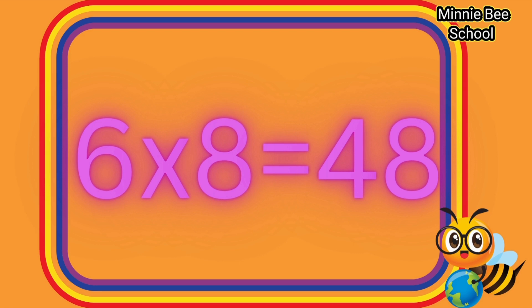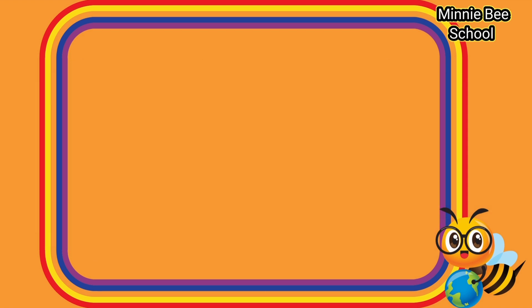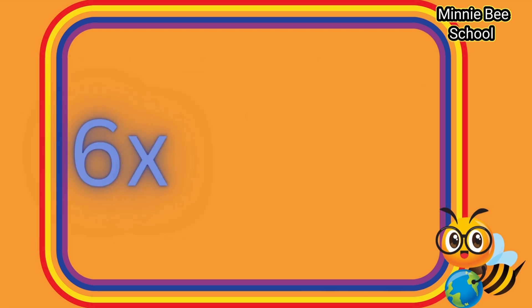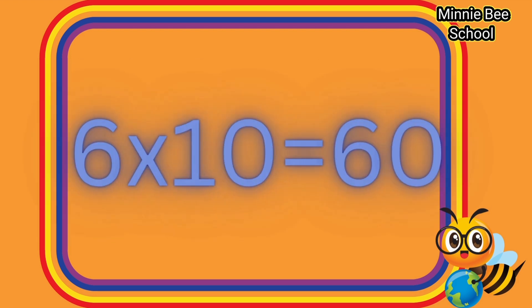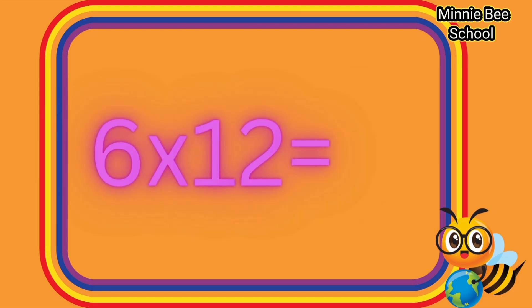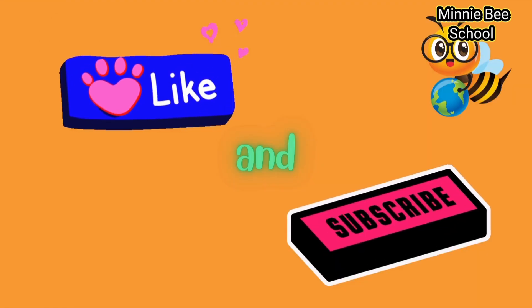Six times eight is forty-eight. Six times nine is fifty-four. Six times eleven is sixty-six. Six times twelve is seventy-two.